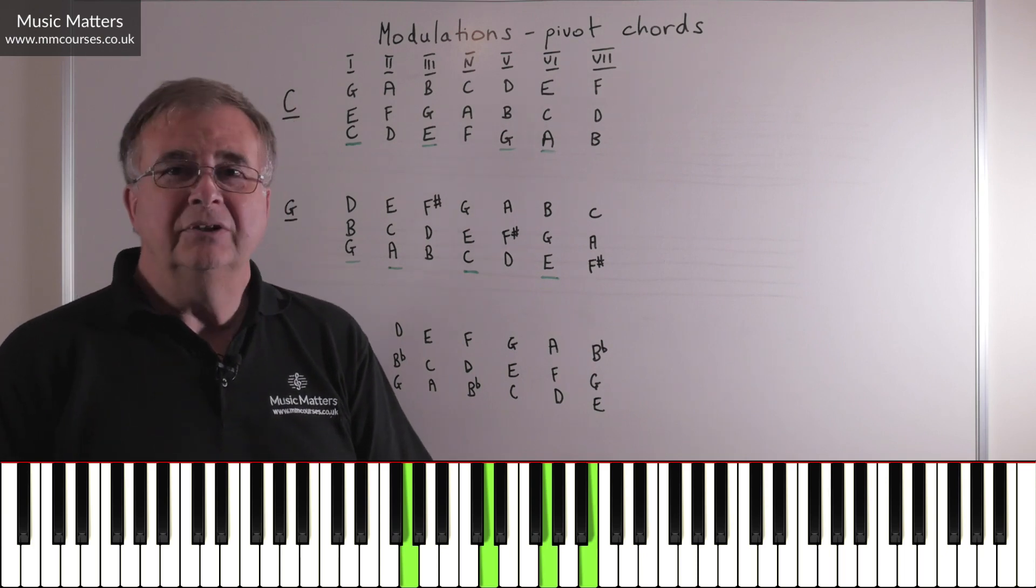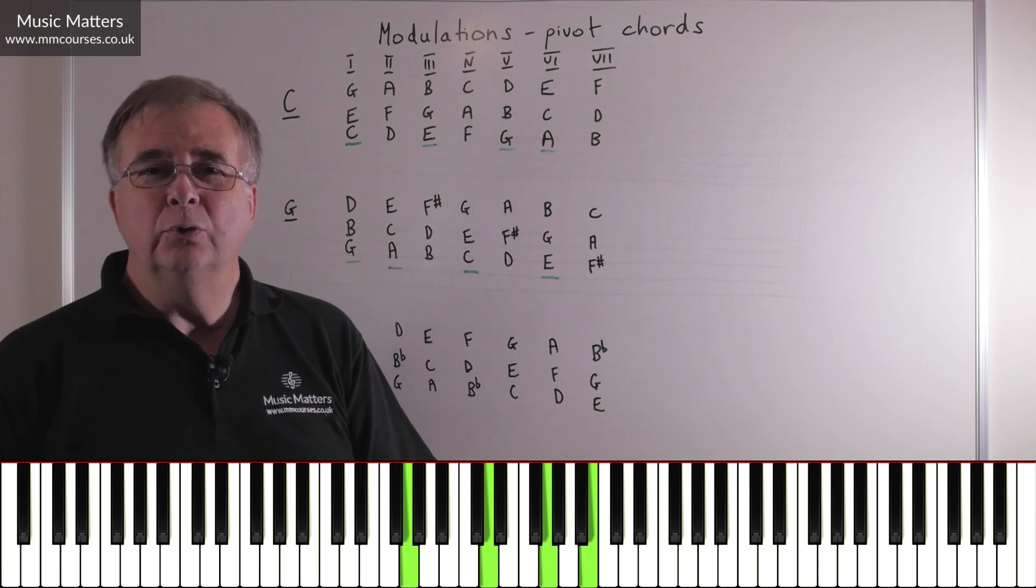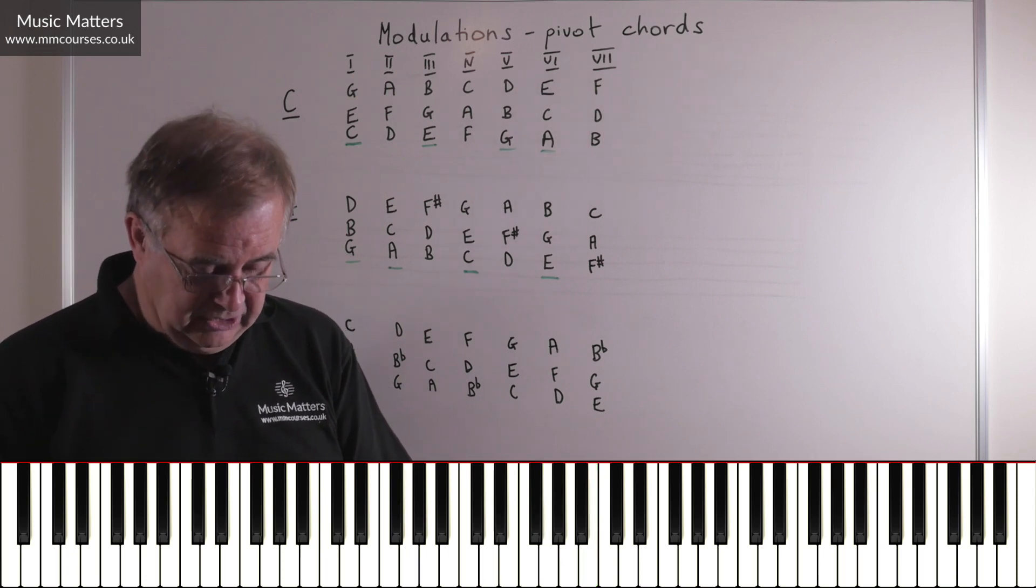I'm then going to decide that this is my pivot chord, because this chord V is also chord I in G. Once I've been through the pivot chord, I can say it was chord V in C, I'm now going to call it chord I in G, and I can just carry on in G major.